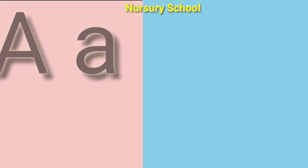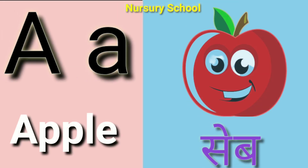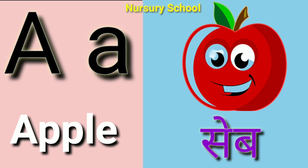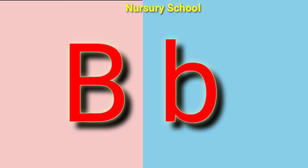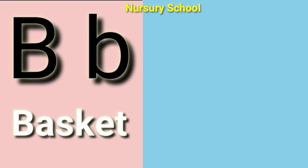A for apple, apple means saib. B for basket, basket means tokri.